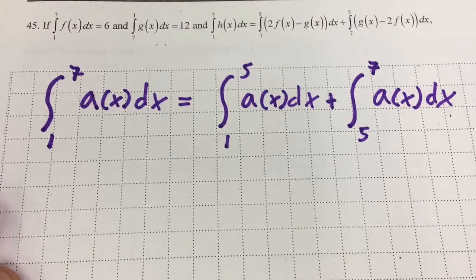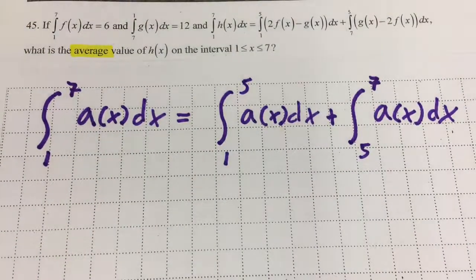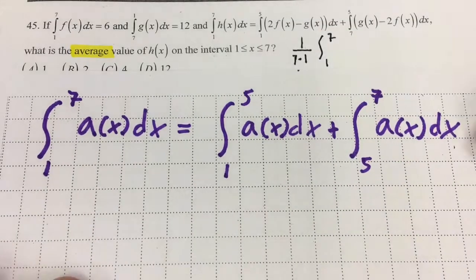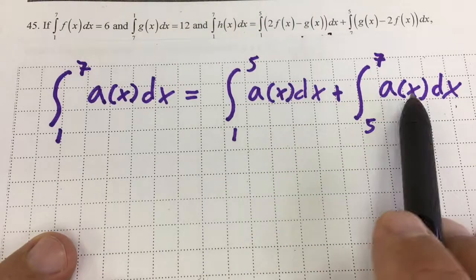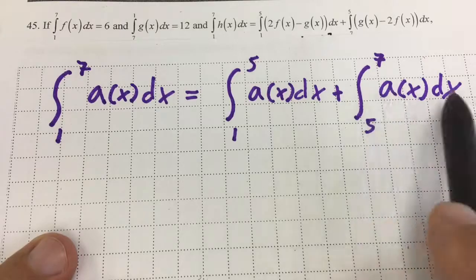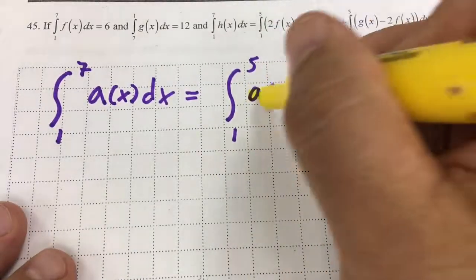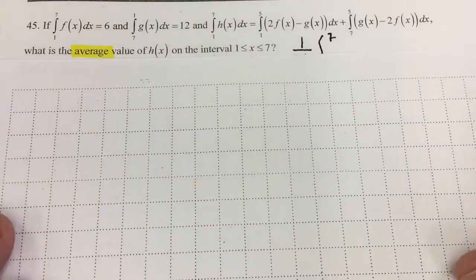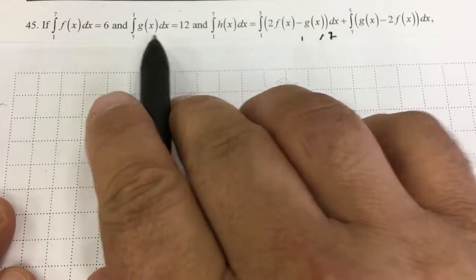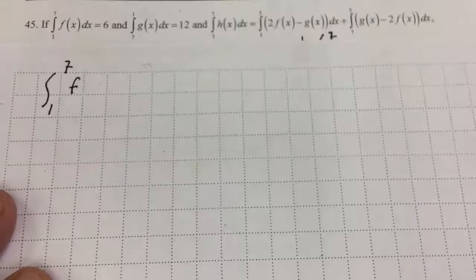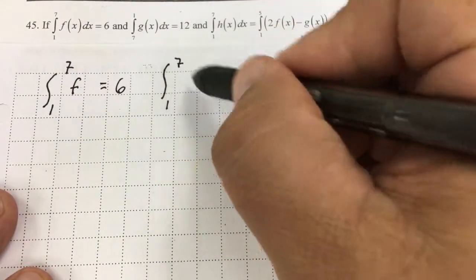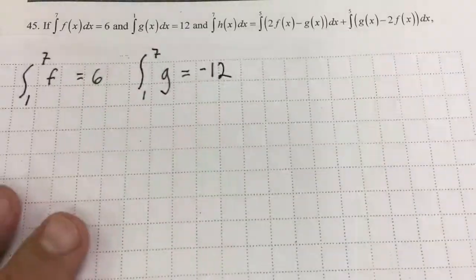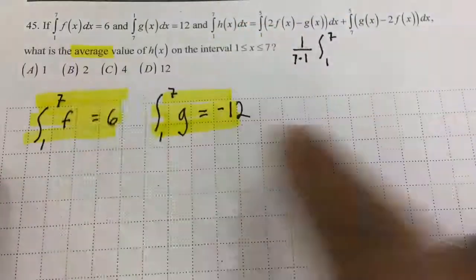The whole idea behind number 45 is average value. Right off the bat I know I'll have to divide by 6, because the average value from 1 to 7 is 1 over (7 minus 1) times the integral from 1 to 7. The key idea is combining the integral from 1 to 5 plus 5 to 7 of the same function to render the single integral from 1 to 7. It says the integral from 1 to 7 of f equals 6, and from 7 to 1 of g equals 12, so from 1 to 7 of g equals negative 12.